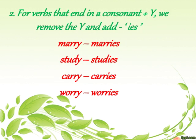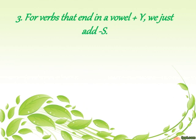For verbs that end in a consonant plus y — if there is a consonant before y, for example marry has r before y — you remove the y and add ies. So marry becomes marries, study becomes studies, carry becomes carries, worry becomes worries.